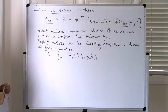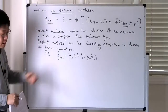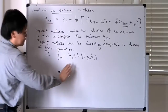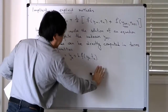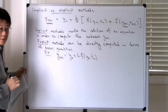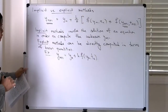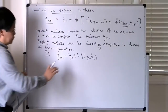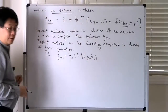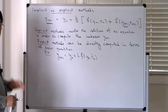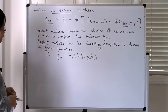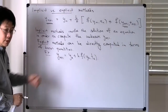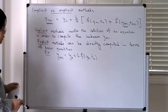You can easily convince yourself that the unknown only shows up on the left-hand side, and the right-hand side involves things which you already know, so you could evaluate it without any difficulty and then compute the solution at the new time.